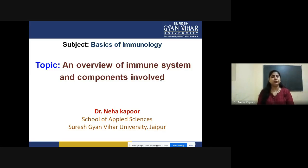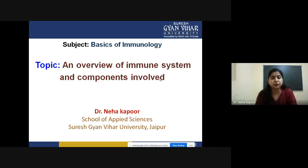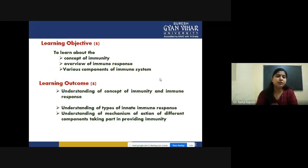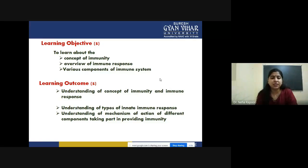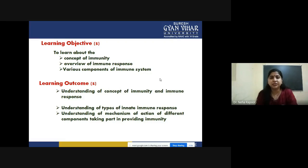Welcome everyone to today's lecture. We will be discussing a brief overview of the immune system and immunology — what are the different components of the immune system that play a major role in conferring immunity to the host body. The main learning objectives are: understanding the concept of immunity, a complete overview of immune responses, the various components and branches of the immune system, and the different cell types, barriers, and mechanistic approaches that aid in providing immunity.